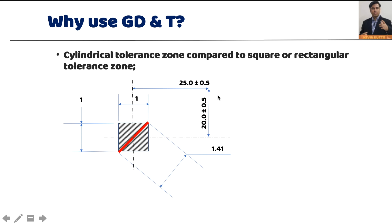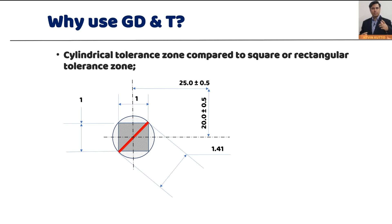In the coordinate tolerancing system, we have a rectangular tolerance zone — if my part falls outside it, it will be rejected. But if you look carefully, the diagonal distance is 1.41 while the vertical and horizontal distance is 1. That means a part placed diagonally at 1.41 will be accepted, but a part at the same distance vertically will be rejected — which doesn't make sense. Functionally acceptable parts are being rejected.